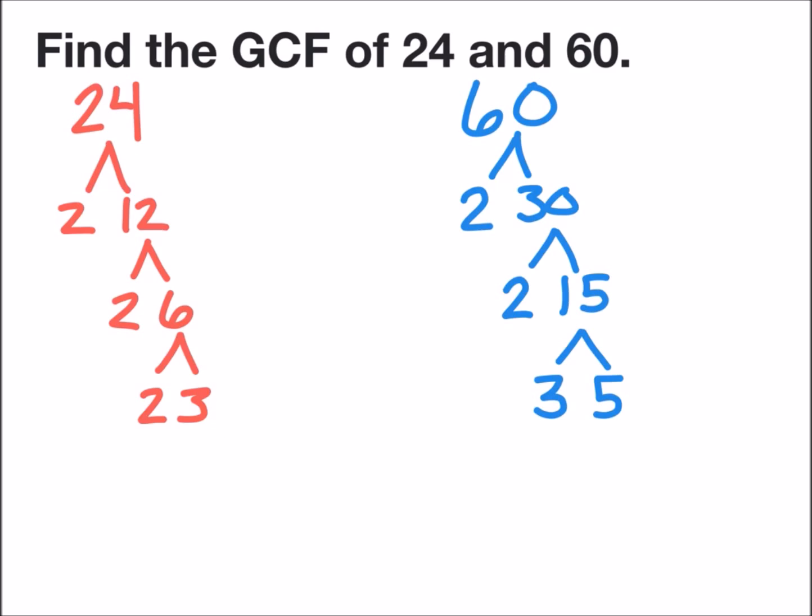Now we must find the prime factors that are common to both factor trees. The number 3 is common to both trees, so I'm going to highlight that. As well, both factor trees contain two pairs of the number 2. So down below, I can say the GCF equals 2 times 2 times 3, or the GCF of 24 and 60 equals 12.